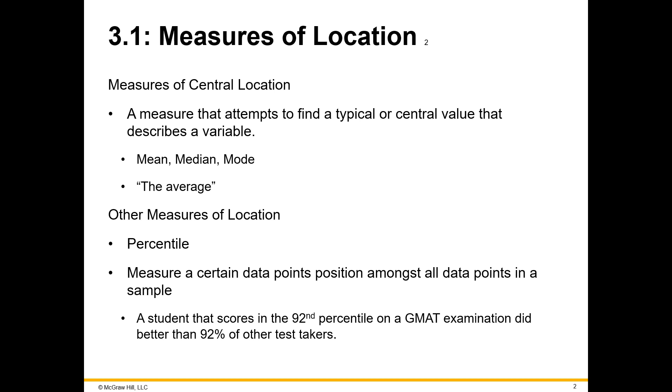For example, if a student gets a 92nd percentile on their GMAT examination, the Graduate Management Admission Test, that means that they did better than 92% of the other test takers. So while this isn't a measure of central location, a measure of average, it is still a measure of location. Where within this overall set of information does this very specific point lie?